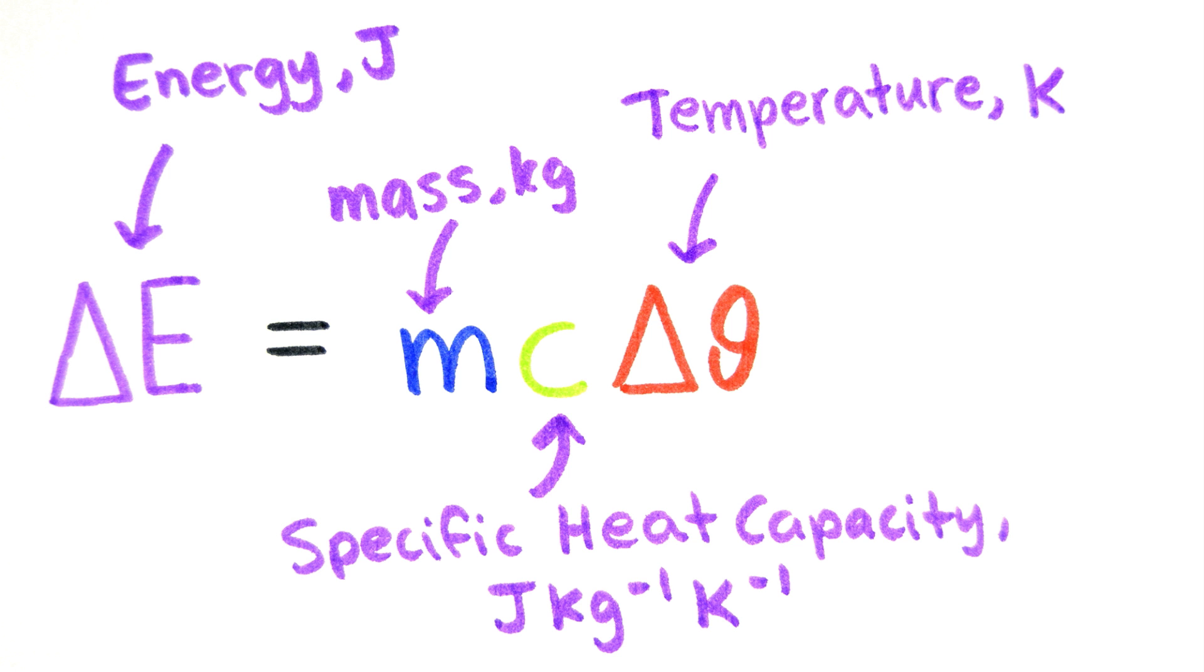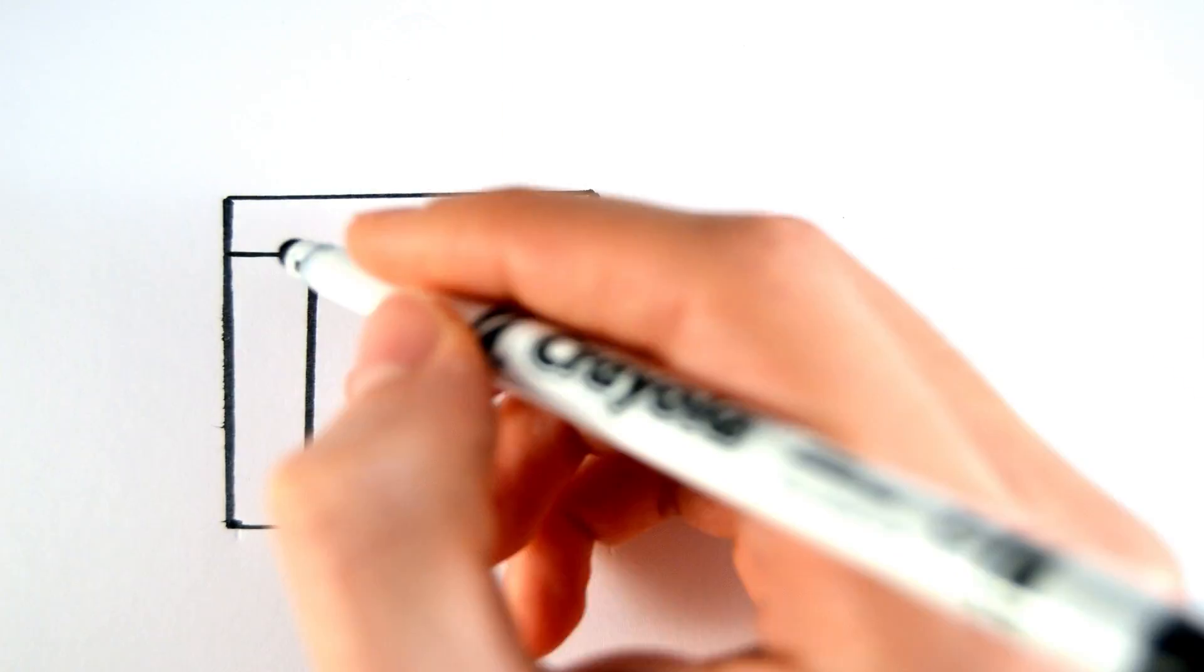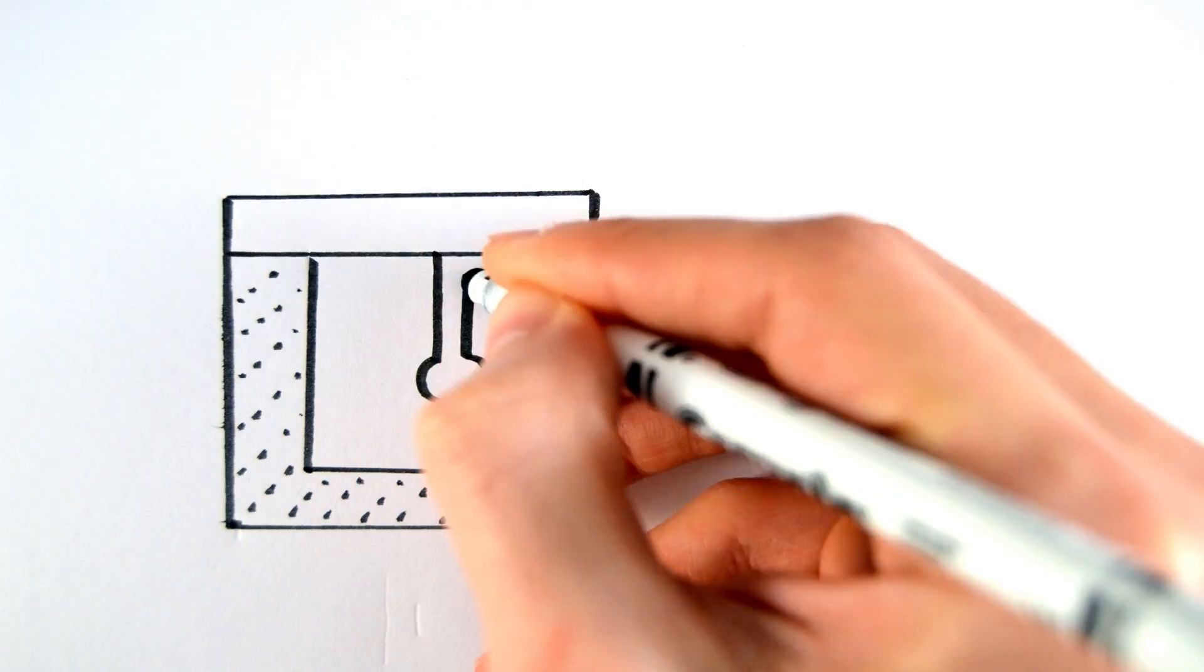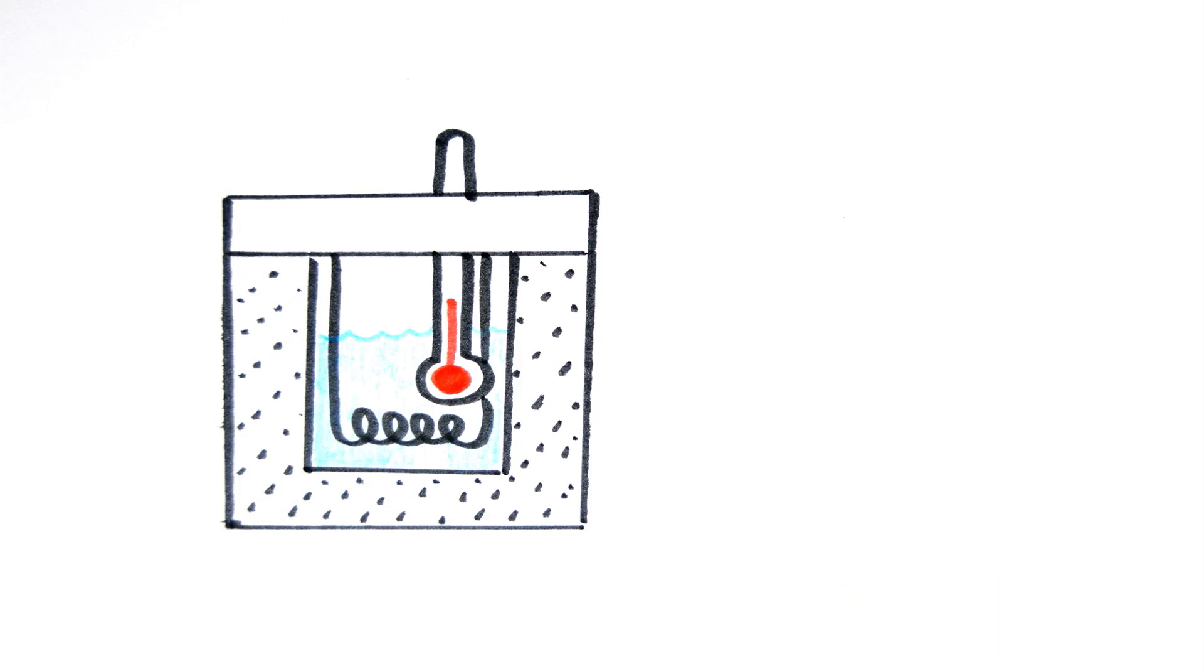You can use this formula to work out the specific heat capacity of a liquid, for example, using this simple experiment. Pour a known mass of liquid into a calorimeter, which will reduce the heat losses to ensure most of the energy put in is used to heat the liquid.